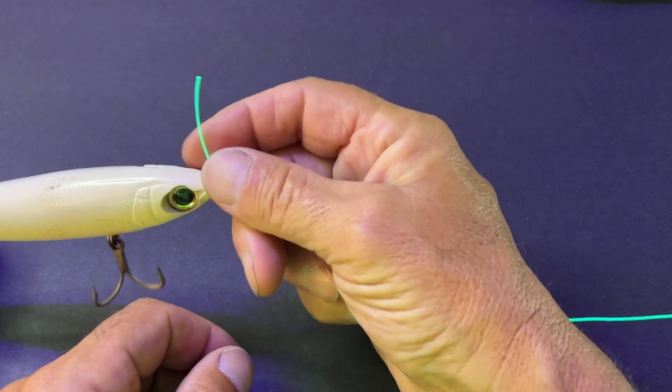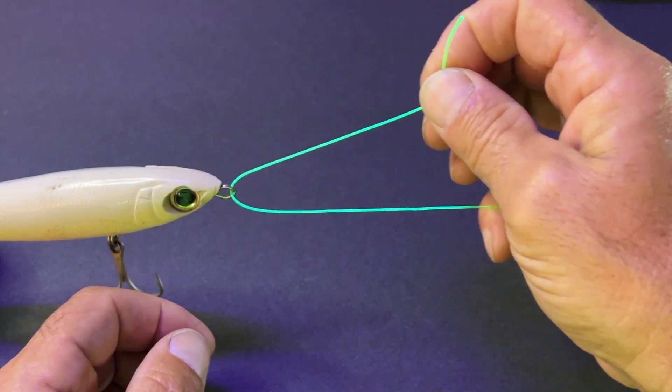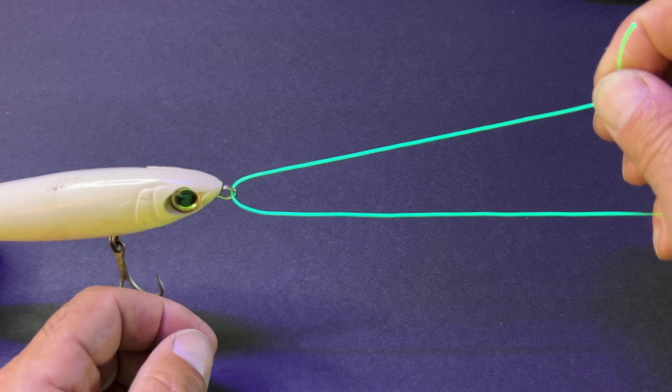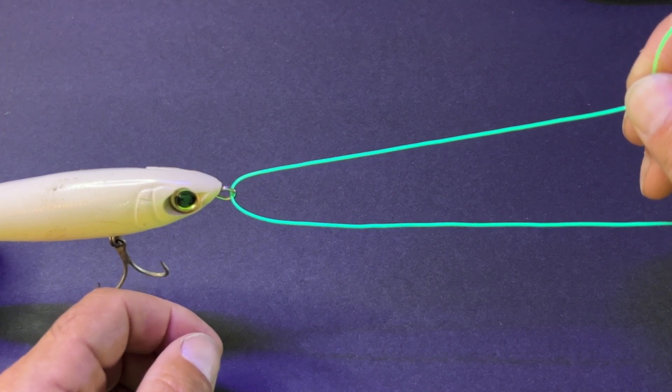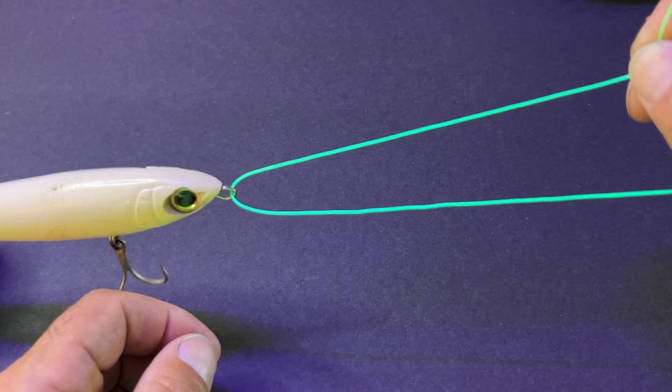Put the line through the eye on the fishing lure and pull the fishing line back six inches. Now, before I start my twist, what I do here...